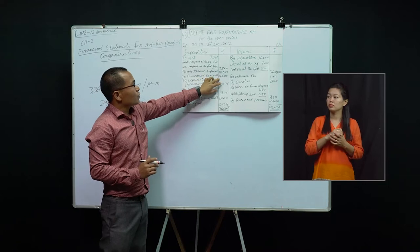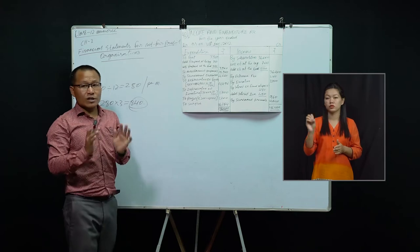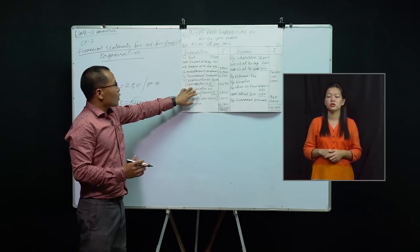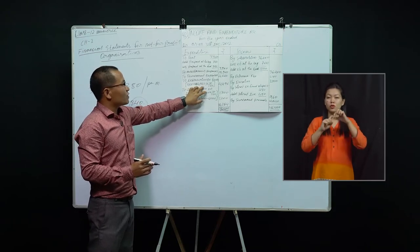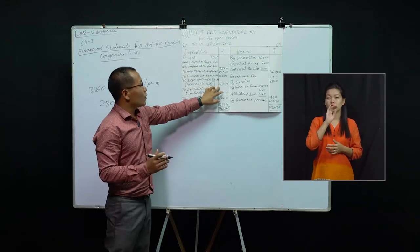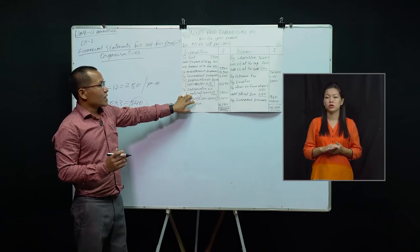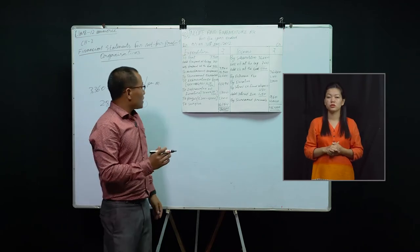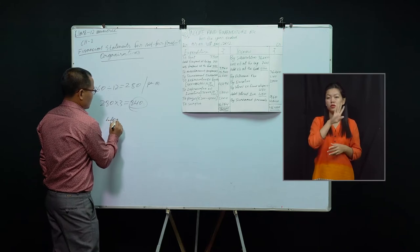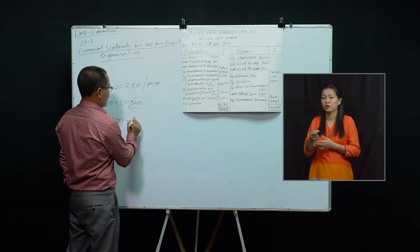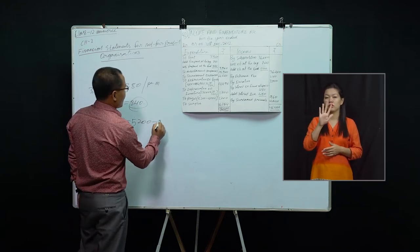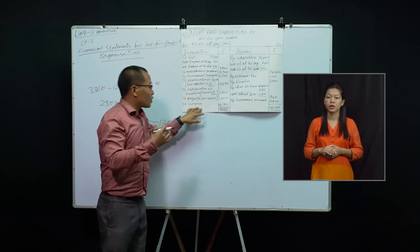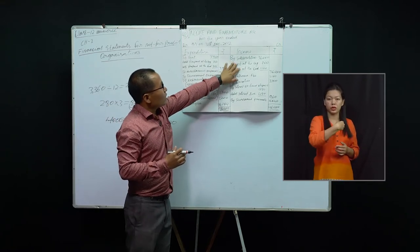Tournament expenses come to 4,040. Depreciation on books — the question clearly states depreciation is to be provided on purchases also. With existing books of 40,000 and additional purchases of 4,960, depreciation on books comes to 4,496. Depreciation on furniture at 10% comes to 1,700. The prize fund allotment is 4,000, but prize expenses are 5,200, so there is an excess expenditure of 1,200 to be charged to the income and expenditure account.